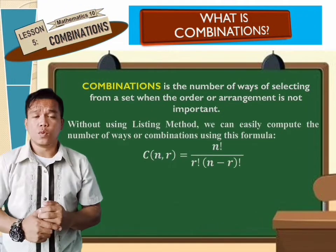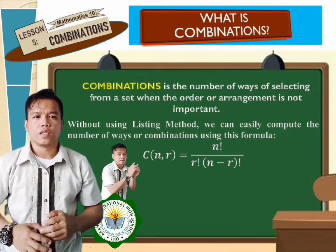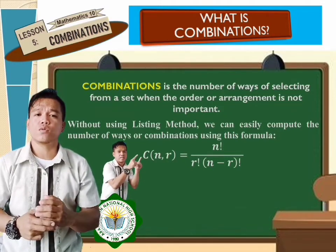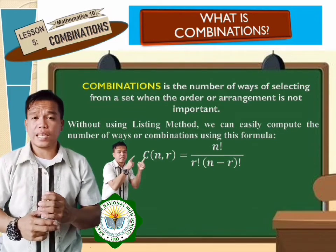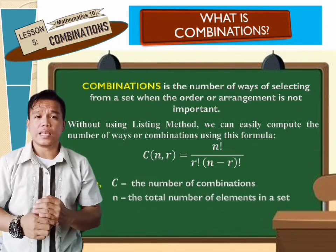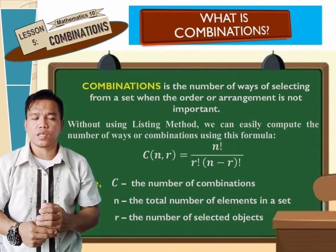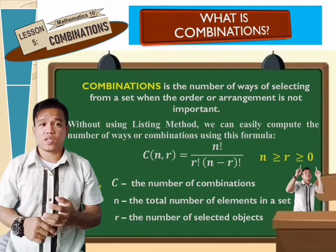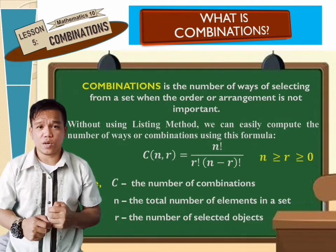Without using the listing method, we can easily compute the number of combinations using this formula: the number of combinations of n objects taken r at a time is equal to n factorial over r factorial multiplied by the quantity (n minus r) factorial, where C is the number of combinations, n is the total number of elements in the set, and r is the number of selected objects. Note that r must be less than or equal to n, and greater than or equal to zero.